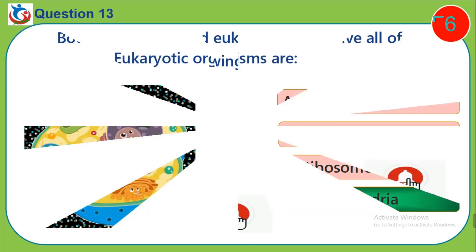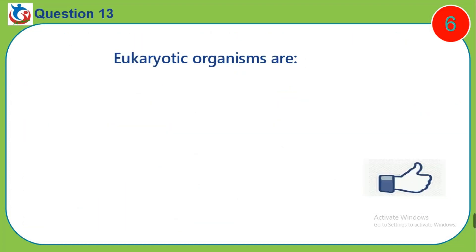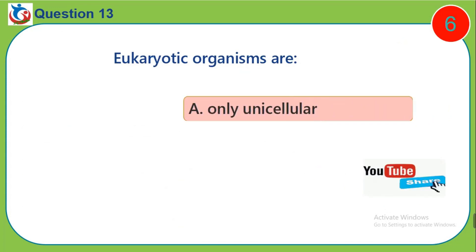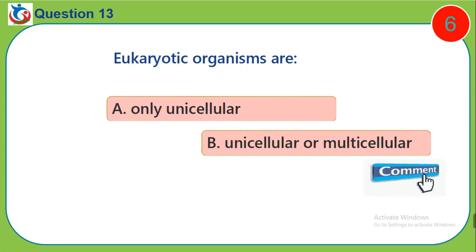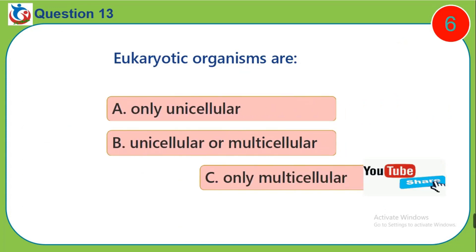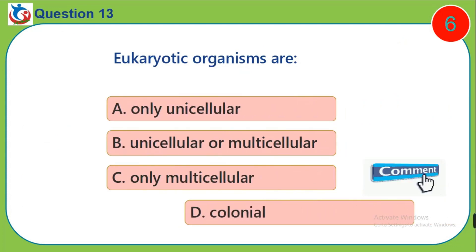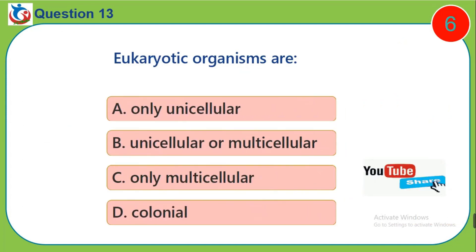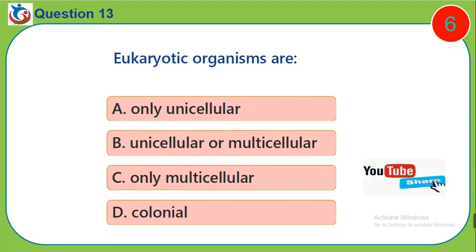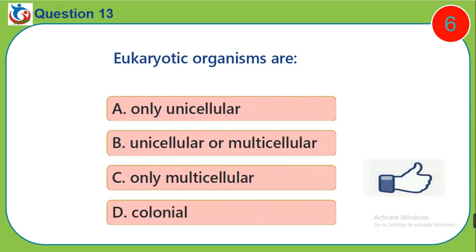Question 13. Eukaryotic organisms are: A. Only unicellular. B. Unicellular or multicellular. C. Only multicellular. D. Colonial.